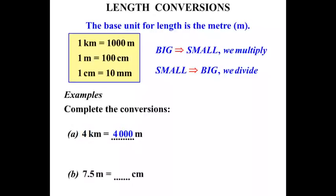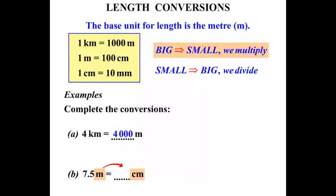The next one: seven point five meters equals how many centimeters? We're dealing with meters and centimeters. We know that one meter is a hundred centimeters, so we'll be working with a factor of a hundred. We're changing from meters to centimeters — from something bigger to something smaller — so we multiply by that hundred. And 7.5 times 100 equals 750.